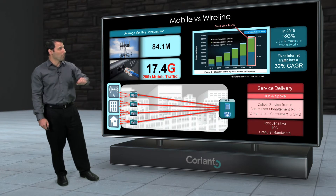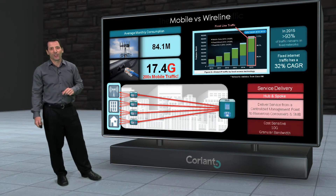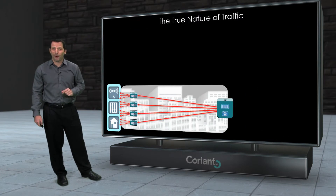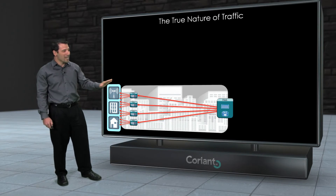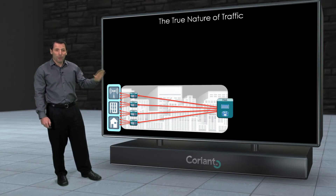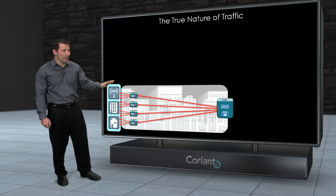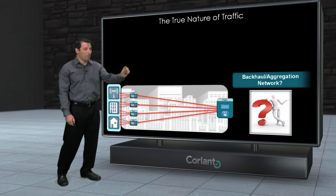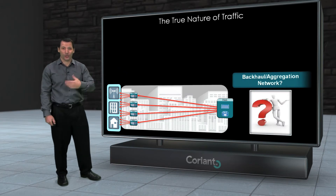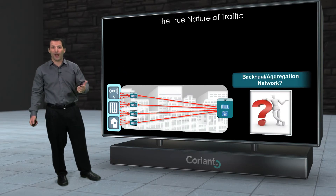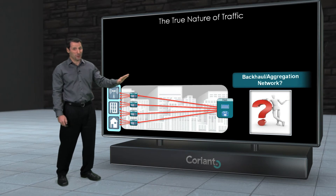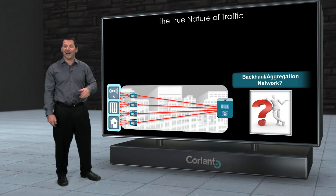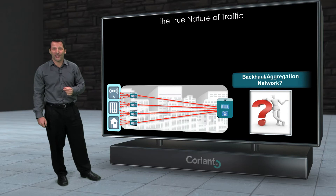So that's the first myth: mobile versus wireline. The second myth I want to dispel is really built into the actual name of these networks. What most people call these networks is either backhaul or aggregation networks — I'm sure you've heard the term 'mobile backhaul' quite a few times. What I want to do is look at that name, first see if it's right, and then see what impact that has on how we build these networks.